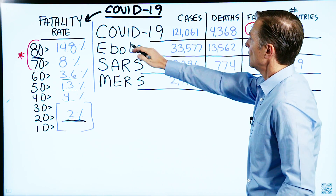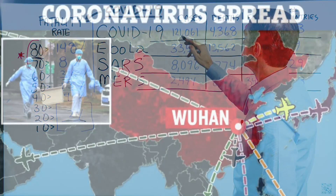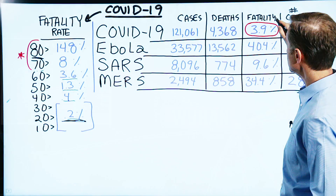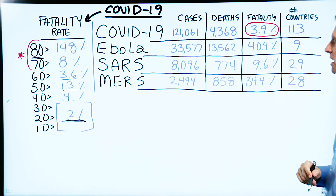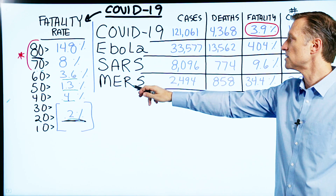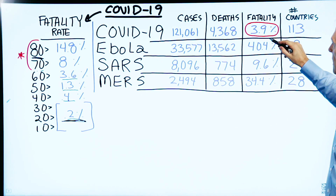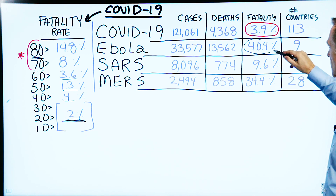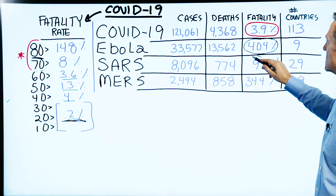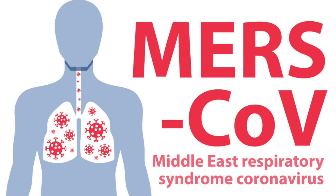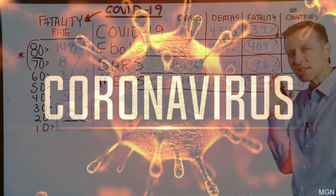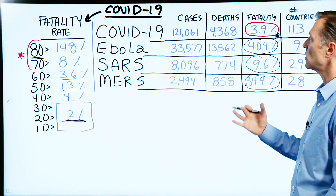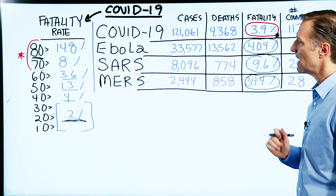Comparing the coronavirus to other viruses: there are 121,000 cases with a 3.9% fatality rate across 113 countries. Compare that to Ebola at 40%, SARS at 9.6%, and MERS at 34.4%. The coronavirus actually has the lowest fatality rate of these four. The news distorts things and makes it sound like everyone is going to die when that's not actually true. It really depends on the strength of your immune system and how strongly you can resist it.